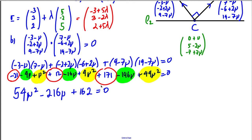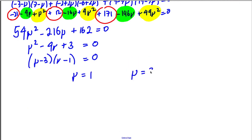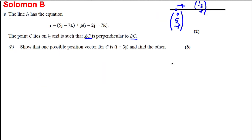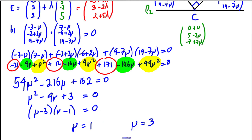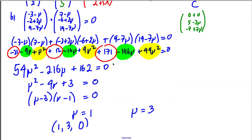Factorising: (μ − 3)(μ − 1) = 0, so μ = 1 or μ = 3. Substituting μ = 1 into the parametric form of L2 gives C = (1, 3, 0), which is the position vector shown in the question. Substituting μ = 3 gives C = (3, −1, 14), which is the other position vector of C.